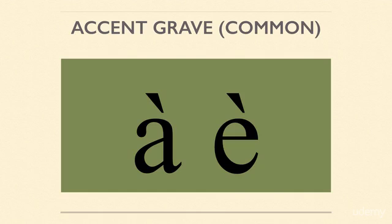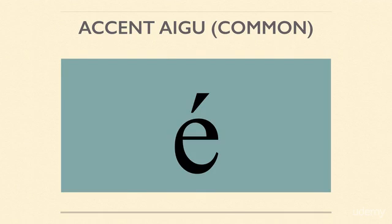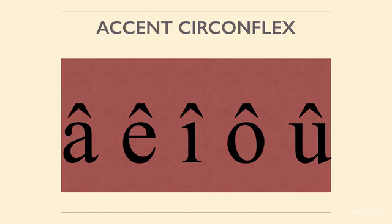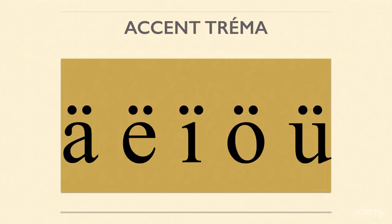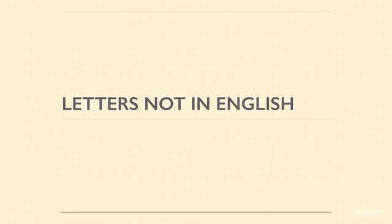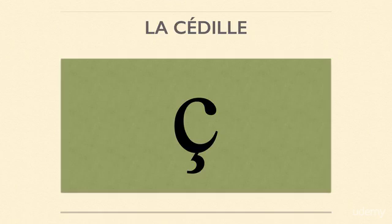We have accent grave — this accent right here. Accent aigu, which is this accent right here, going the opposite direction. Accent circonflexe, which looks like a little roof. Accent tréma, which are the two dots above the letters as you can see right here. And then we also have one letter not used in English but used in French: la cédille — a C with a little squiggle at the bottom.